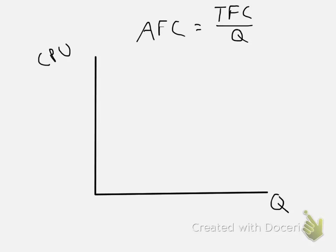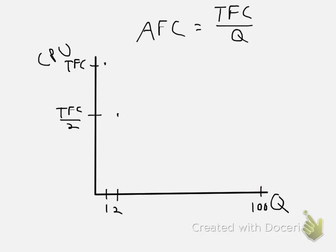Average fixed costs start out fairly high. If our output equals 1, then the height equals our total fixed cost. If our output equals 2, the point on the AFC curve will be half of what the original total fixed cost was. As output gets really big, average fixed cost gets really small, because total fixed costs don't change with output. For example, at a quantity of 100, we have TFC divided by 100, so that's going to be small.